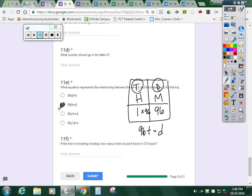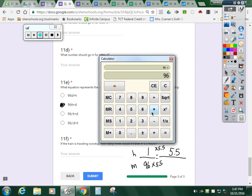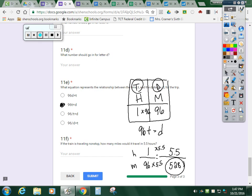And the last one, if the train is traveling nonstop, how many miles would it travel in 9.5 hours? I have corrected so many papers without a labeled equal fraction. One hour, 96 miles. You have to scale that up to five and a half hours. One times five and a half is five and a half. And whatever you do to the top, you must do to the bottom. 96 times 5.5 is 528 miles in five and a half hours. Now it's your turn to retake the test. Make sure you make an appointment with me. Thank you.